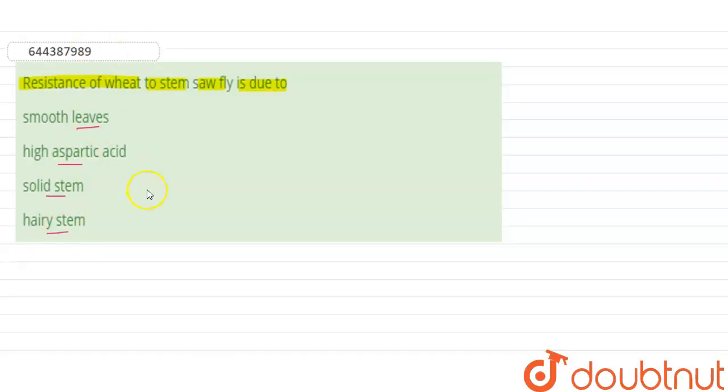Let's see the options one by one. So smooth leaves do not attract bollworm.